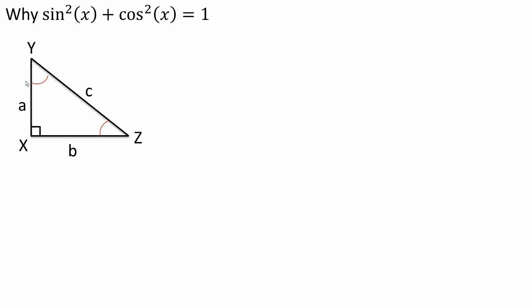I will label the sides. This side right here is A, this side is B, and the hypotenuse is C. This angle right here is X, this angle is Z, and this angle is Y.